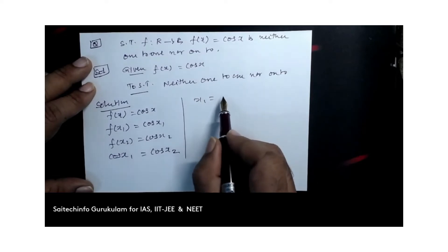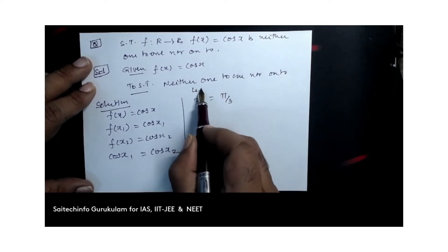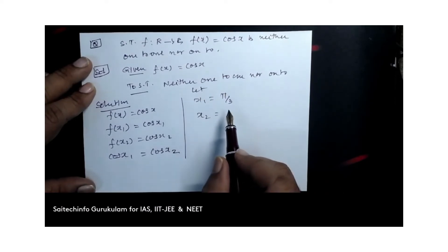Let us assume x1 is π by 3, x2 is minus π by 3.